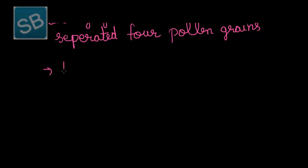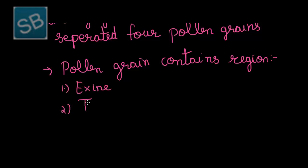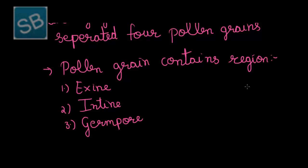Therefore, a pollen grain contains three regions: first, exine; second, intine; and third, germ pore. These are the structures mainly associated with the pollen grain. Now, let us study in detail about the structure of a pollen grain.